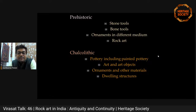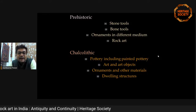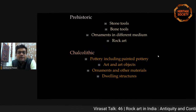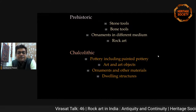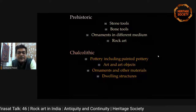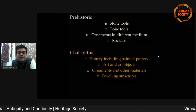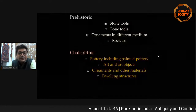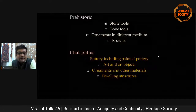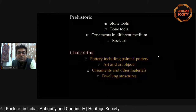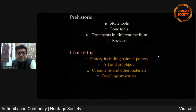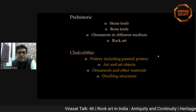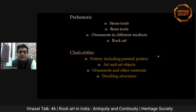Coming to the era when metal was invented — the Chalcolithic period — we find objects in different forms: pottery with paintings, different art objects, ornaments, and other materials. We also find dwelling structures. Even dwelling structures like the Neolithic site of Burzom and others have some kind of form and design — oval, circles, etc. — all of which come through the artistic creation of humankind.